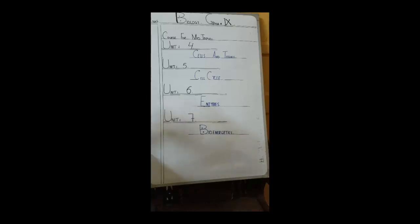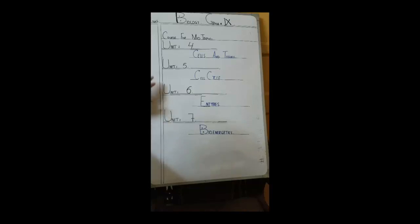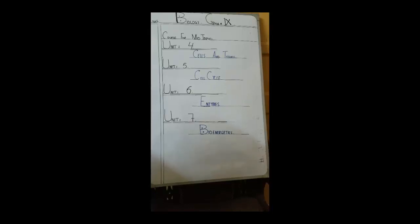The course we have for midterm in Class 9th will be: Unit 4 - Cells and Tissues, Unit 5 - Cell Cycle, Unit 6 - Enzymes, Unit 7 - Bioenergetics. This will be the course that we will cover for midterm. In the next part, we are going to start our lecture from Unit 4.